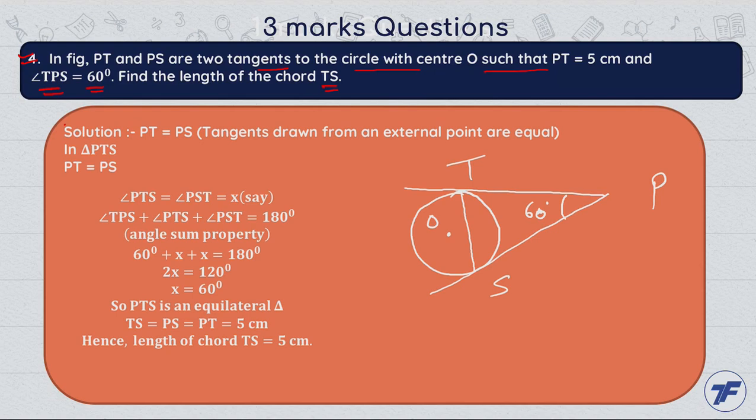Now let's discuss the solution. PT equals PS — the lengths of tangents drawn from an external point are equal. So we have PT equal to PS. In triangle PTS, if two sides are equal, then the angles opposite to those sides are also equal.